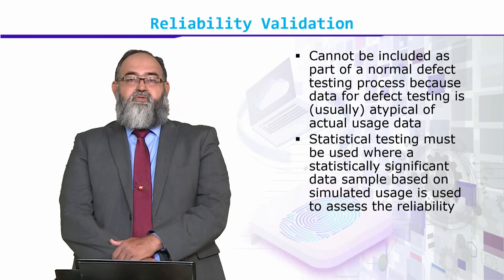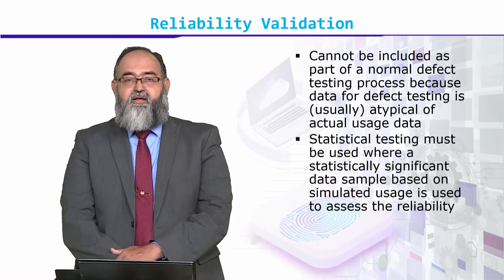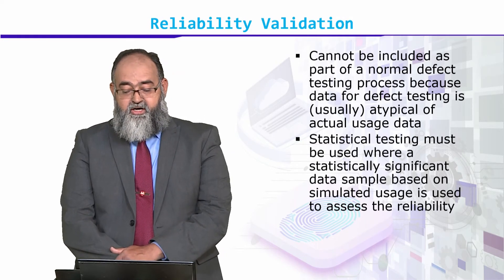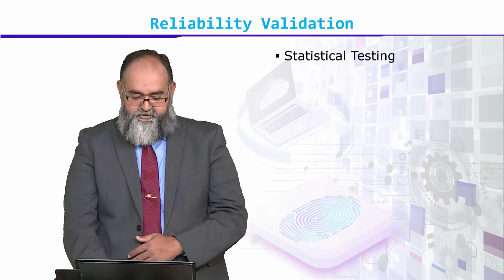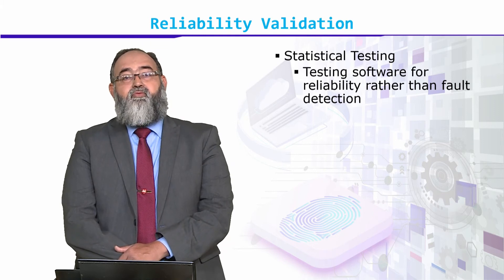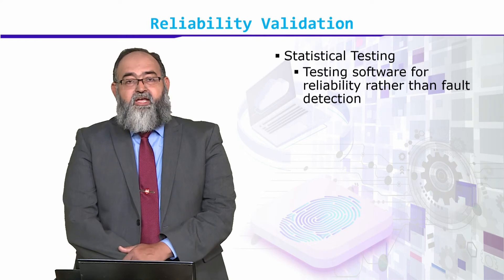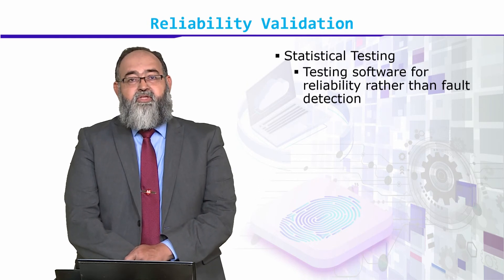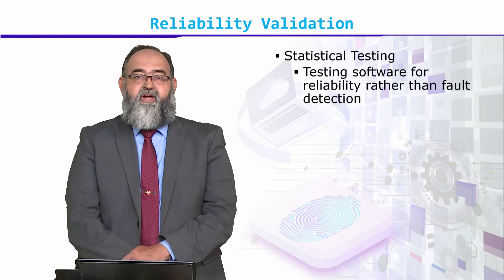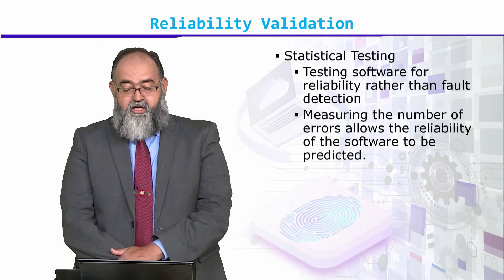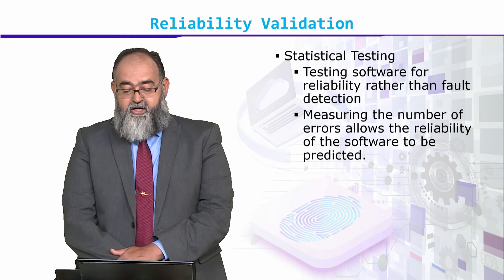Statistical testing must be used, where a statistically significant data sample based on simulated usage is used to assess reliability. Statistical testing means testing software for reliability rather than fault detection. Fault detection is about finding defects in a program, whereas reliability testing is about how many hours or days a system will work free of defects. We measure the number of errors and allow the reliability of the software to be predicted.